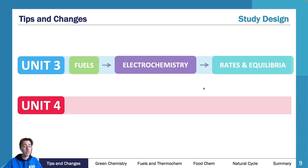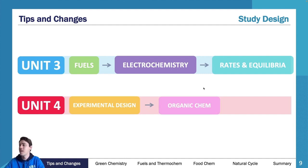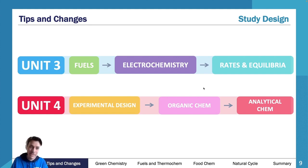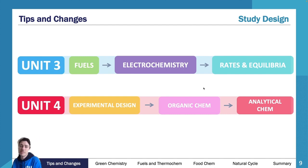Unit four is how chemistry explains life, and we have experimental design, organic chem, and analytical chem. This used to include experimental design, organic chem with analytical chem, and then food chemistry. They've now split those two up, and that's essentially how the units run.